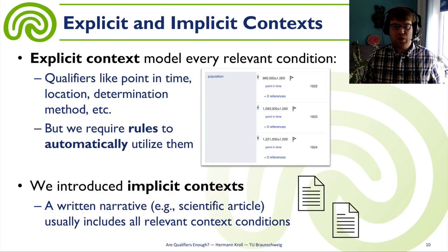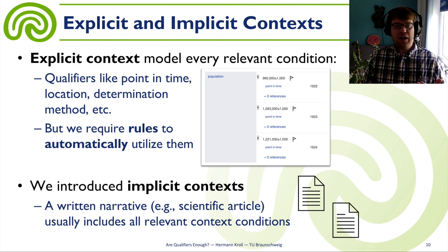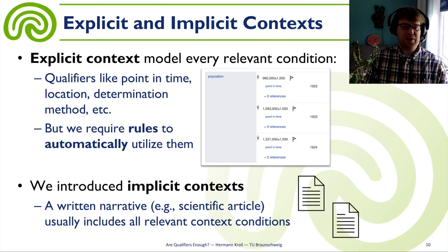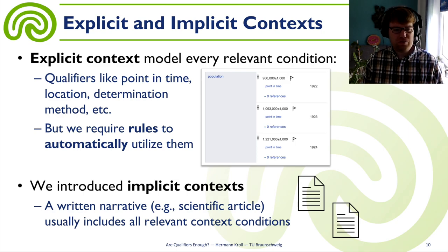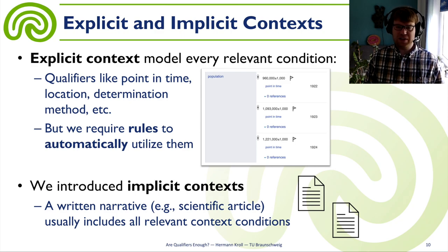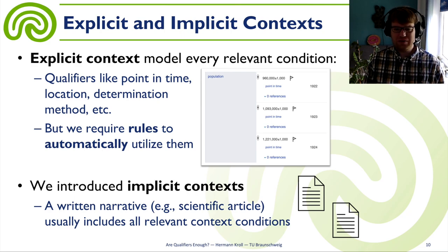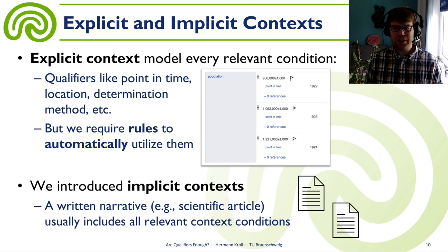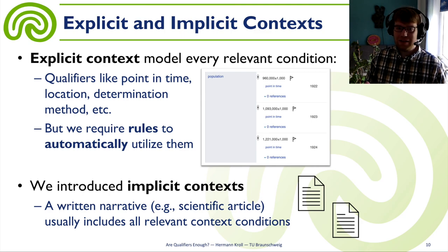How can you do it? On the one hand, there are explicit context models. You need to model every relevant condition, like qualifiers do — we model the point in time, the location, the determination method. But then we must know every condition, which can be exhausting. On the other hand, we also need automated rules for how to combine these contexts. For time, it might be simple: just say it must be valid in the same time, meaning the point in time must be equal or intervals must overlap. But if we consider how many different qualifiers we have in Wikidata, think about how many rules we would need — it's a very challenging approach.